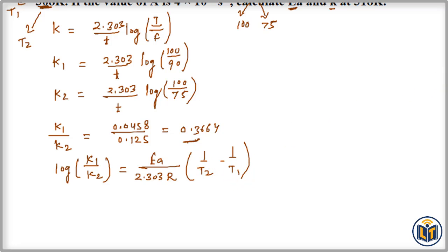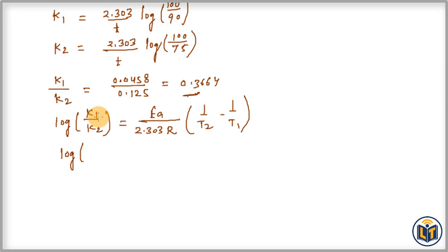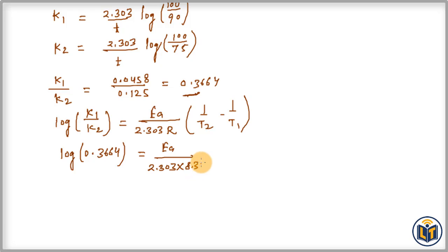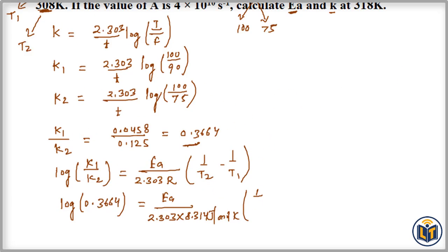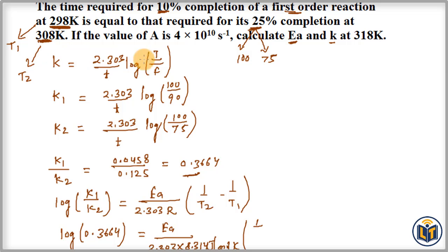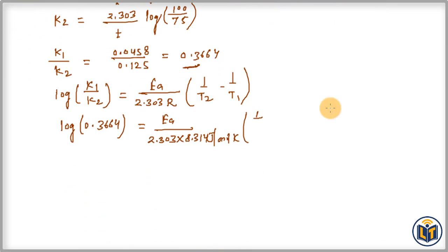Plugging in values: log(K1/K2) = 0.3664 = Ea / (2.303 × 8.314 J·mol⁻¹·K⁻¹) × (1/308 − 1/298). The final temperature is 308 K and the initial temperature is 298 K. Now we calculate the energy of activation.